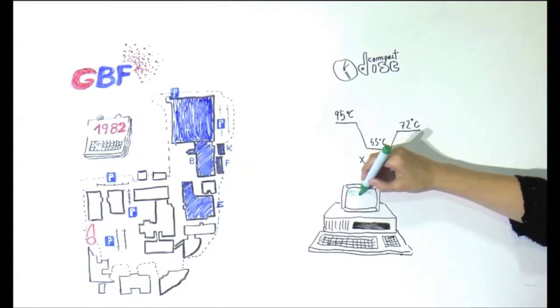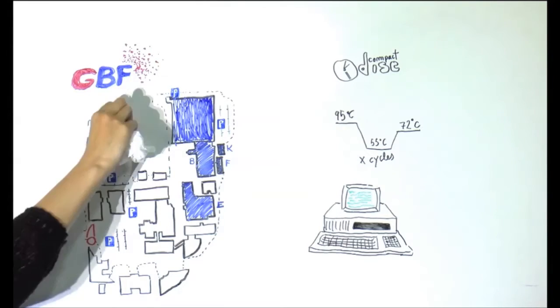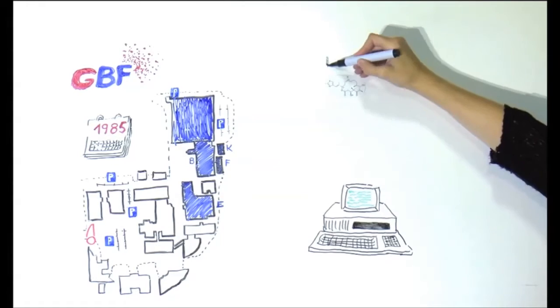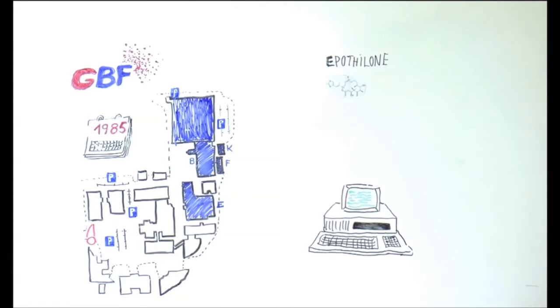In 1985, in the GBF, epothelone was isolated from myxobacteria, and its structure was elucidated by a dream team of scientists, Gerhard Höfler and Hans Reichenbach. The strong effect of epothelone against breast and colon tumor cells gathered lots of attention and interest, but it was only patented some years later.